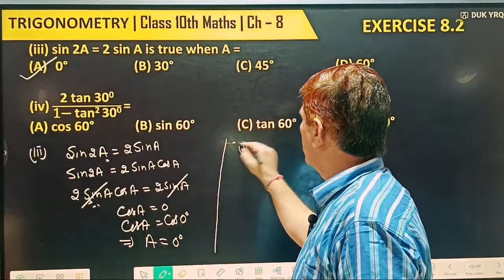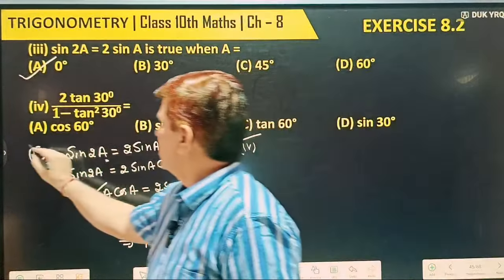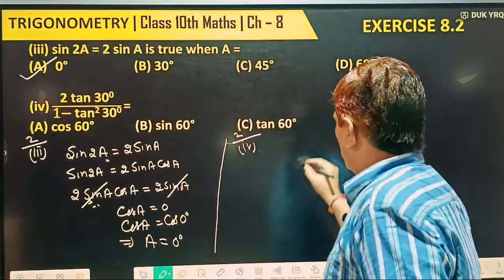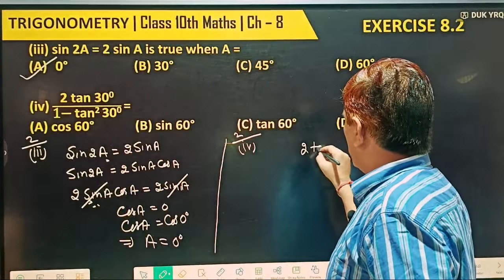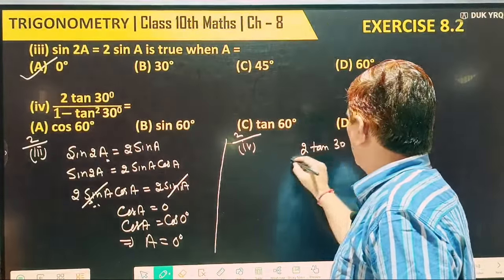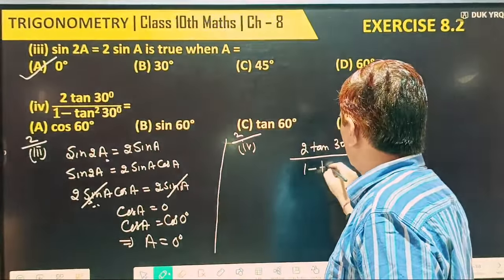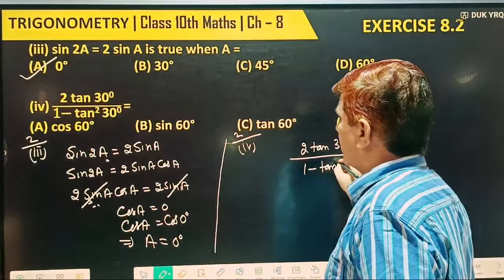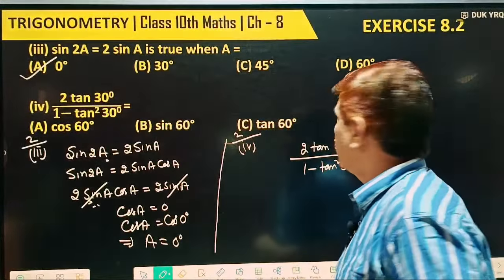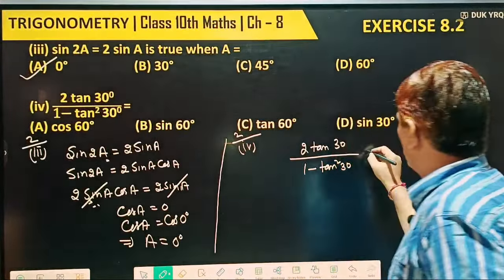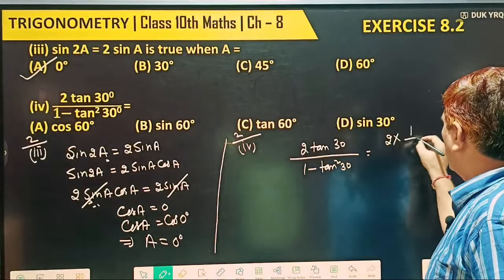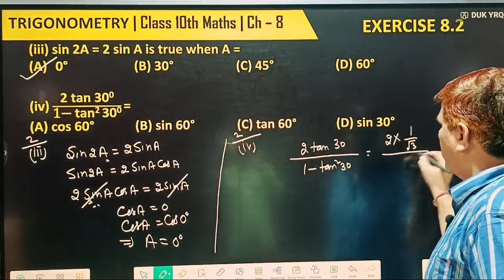Now taking the fourth part of question number 2. We have 2 tangent 30 degree by 1 minus tangent square 30 degree. Put the value of tangent 30, which is 1 by root 3. So we get 1 by root 3 divided by 1 minus tangent square 30 degree.